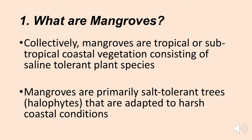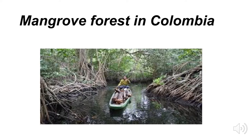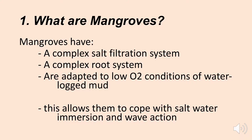Along the coastline in many tropical and subtropical areas of the world you find mangrove forests. Mangroves have a complex salt filtration system, a very complex root system, and they're adapted to the low-oxygen conditions of the waterlogged mud they grow in. This allows them to cope with salt water immersion and the wave action seen in coastal areas.